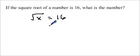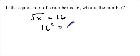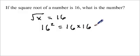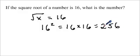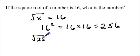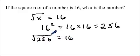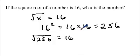So in order to find out what the number is, we're going to have to square 16. 16 squared is the same as 16 times 16, which equals 256. So we know that the square root of 256 is 16. To find the number when we know its square root, we need to square that square root.